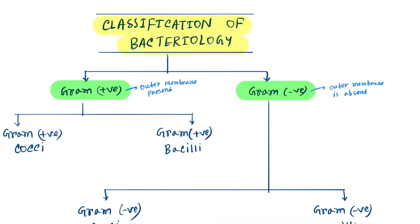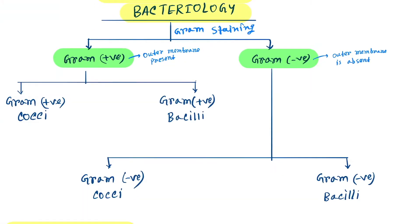Hello friends, today our topic is the classification of bacteriology. According to gram staining, they are divided into gram positive and gram negative bacteria. Gram positive bacteria are divided into gram positive cocci and gram positive bacilli.